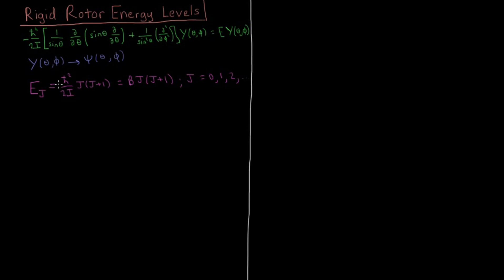And that's h-bar squared over 2 times moment of inertia, the pre-factor in this kinetic energy operator up here, times the quantum number j times the sum of j plus 1. And this can also be said to be equal to the constant b times j times j plus 1.